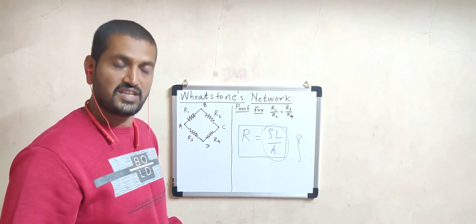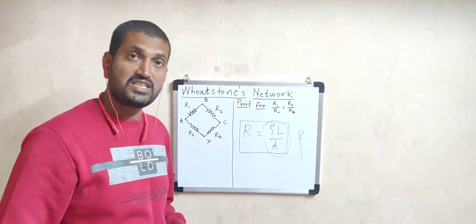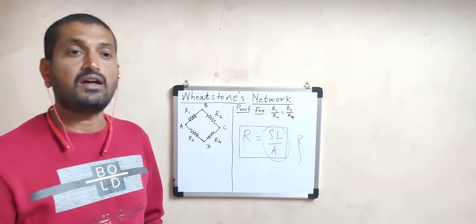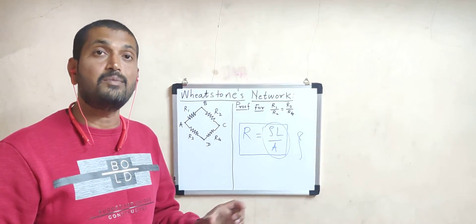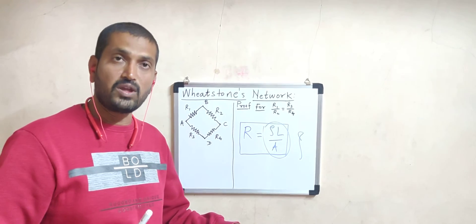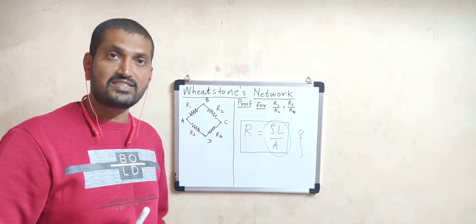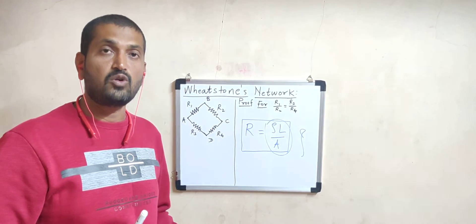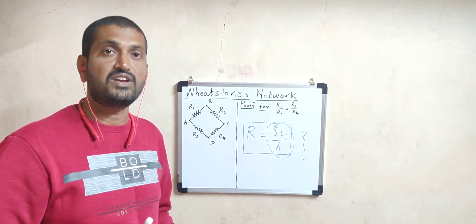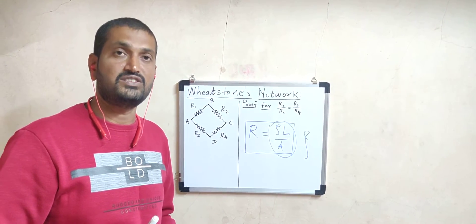The solution is yes. There is one device by which we can determine the unknown resistance of a given metallic wire without knowing its material, without knowing its length, and without knowing its area of cross section. Such a device is called a meter bridge.